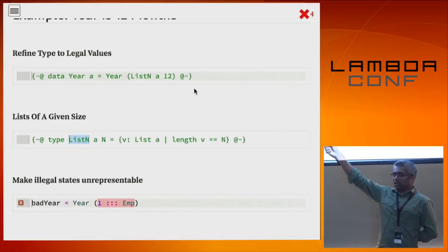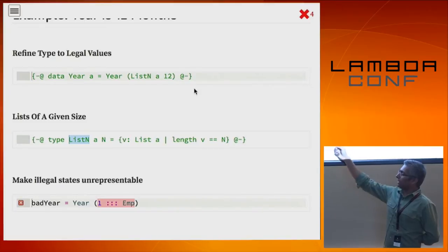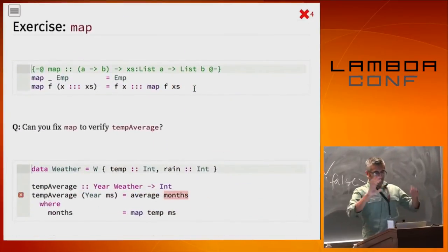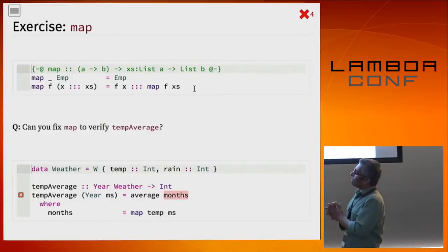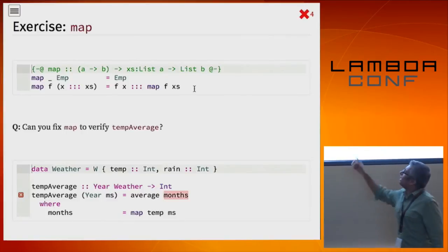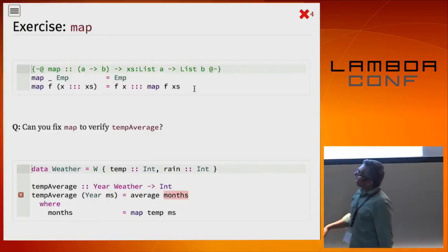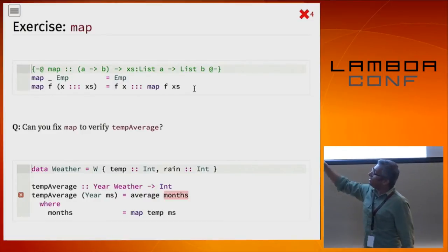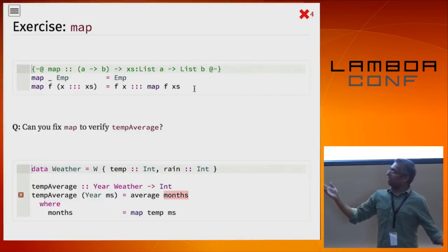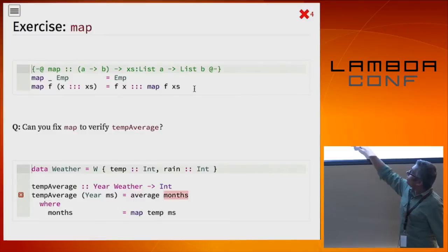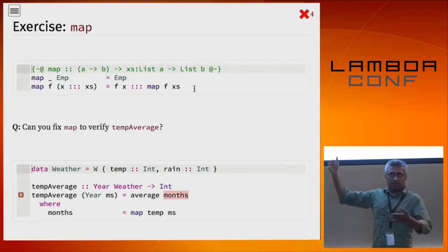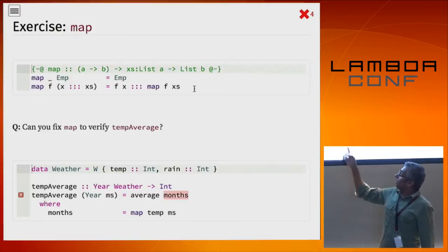So let's work with years for a bit. I want to write a function called temp_average that takes a Year of Weathers — where Weather has fields temperature and rain — and returns a single integer: the average temperature for all months of the year. I call average on months, where months is obtained by mapping 'temp' over each weather value. What's the problem? Map lost the type — we need to say that map preserves length.